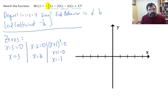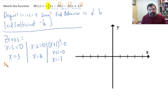Now let's mention the multiplicity. The x minus 3 factor was to the first power — multiplicity 1. The x minus 2 was to the first power — multiplicity 1. And for x equals negative 1, we have multiplicity 2.